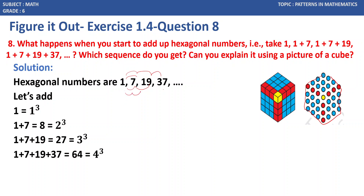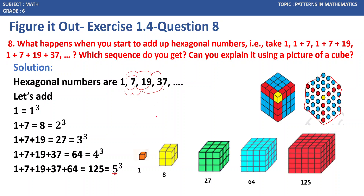Continuing: 1 plus 7 plus 19 plus 37 equals 64, which is 4 cubed. Then 1 plus 7 plus 19 plus 37 plus 61 equals 125, which is 5 cubed. So we are getting a cubical pattern. The sums 1, 8, 27, 64, 125 are 1 cubed, 2 cubed, 3 cubed, 4 cubed, and 5 cubed. Adding up the hexagonal numbers gives the cubes of natural numbers.